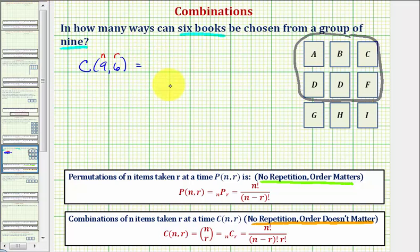So we would have n factorial or nine factorial divided by n minus r factorial times r factorial, where n minus r is nine minus six. We have nine minus six factorial times six factorial, which is equal to nine factorial divided by three factorial times six factorial.